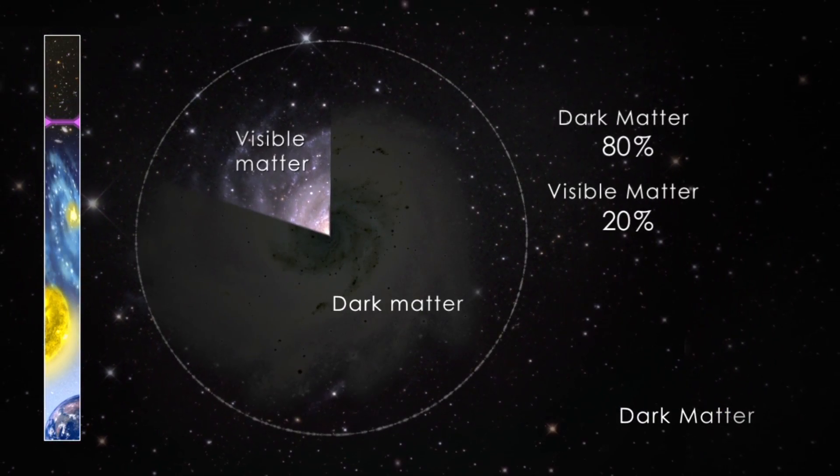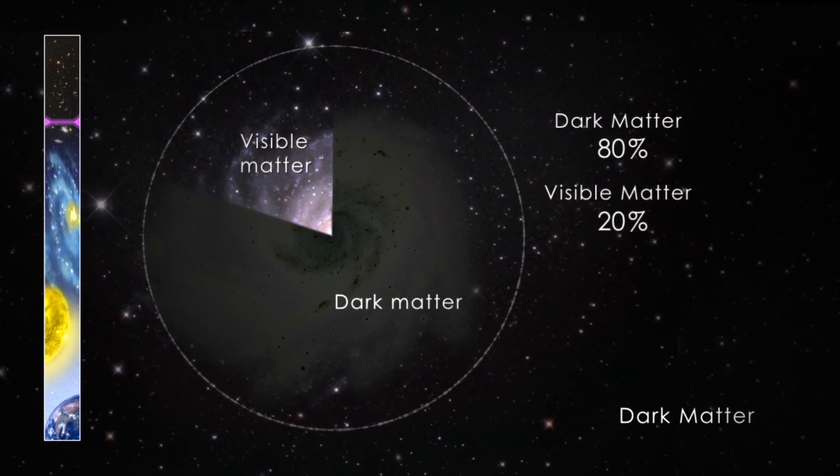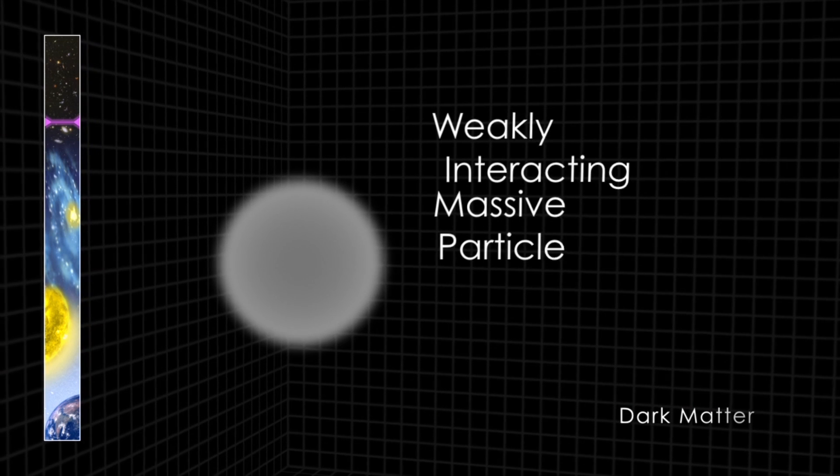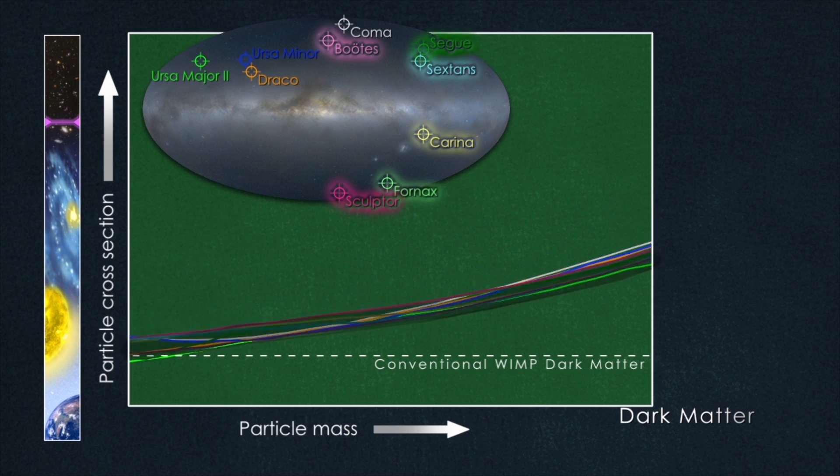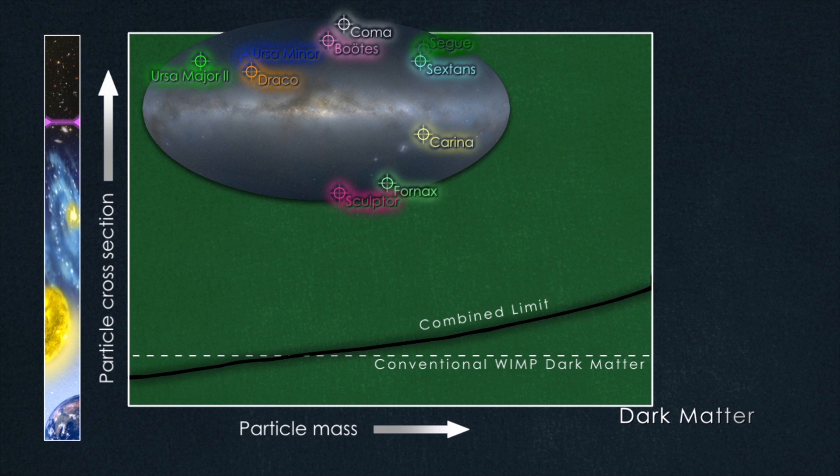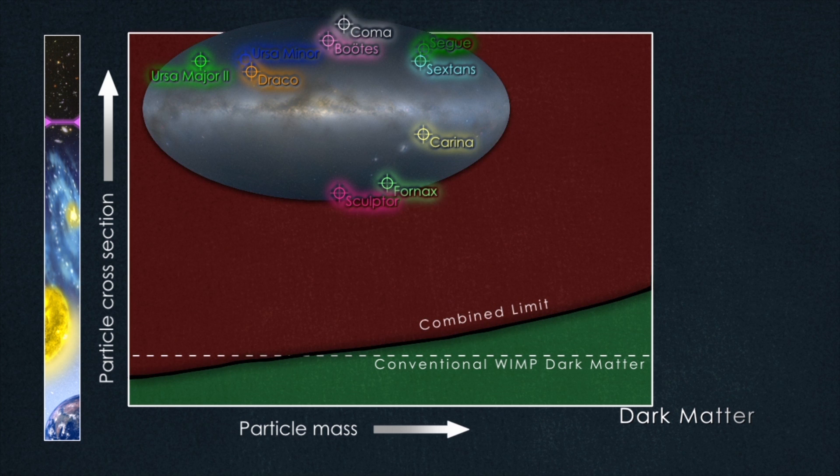Two years of scanning the sky with Fermi's Large Area Telescope have set the strongest limits yet for WIMP dark matter. The longer Fermi operates, the better its ability either to box in the nature of dark matter, or to find actual evidence of what it is.